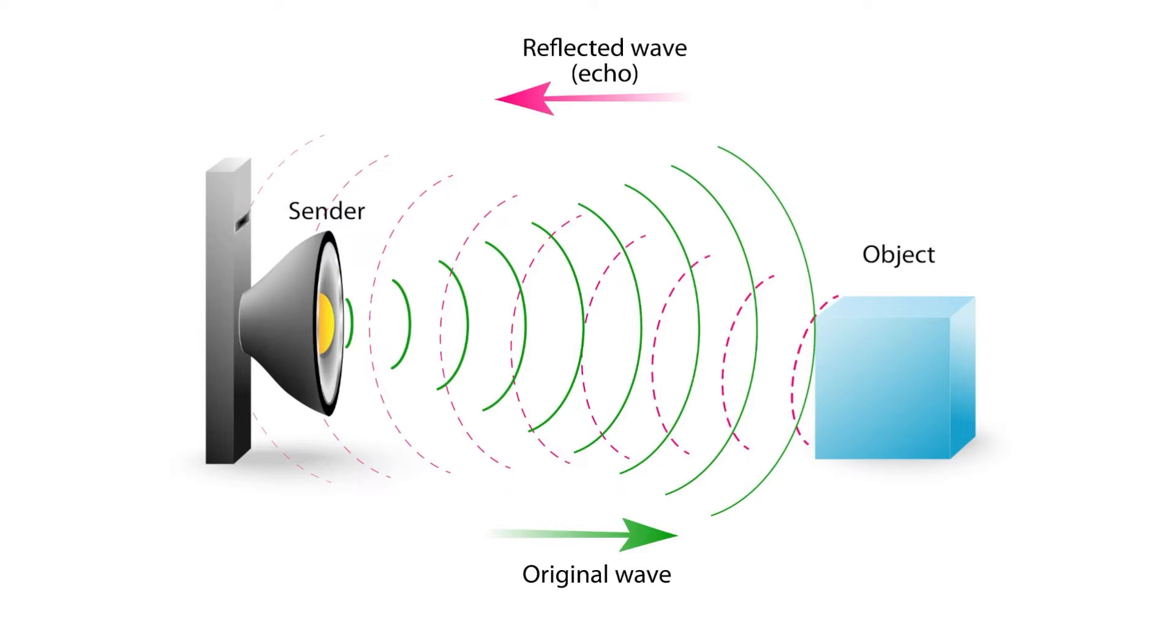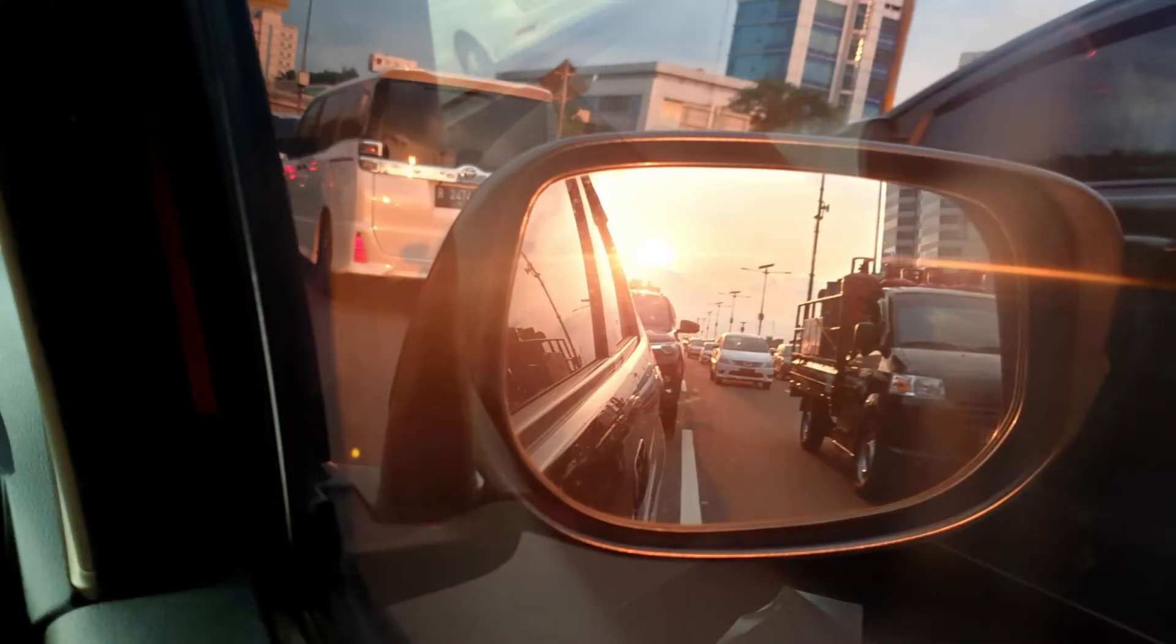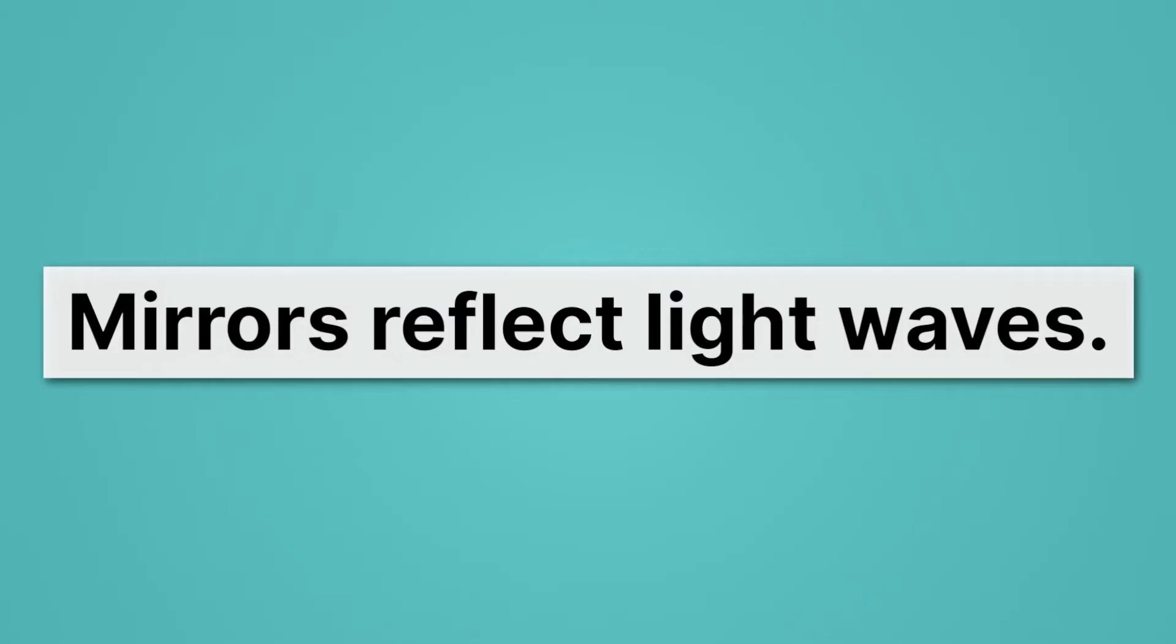Well, there are other important examples of a reflected wave. Here, we see light waves being reflected. Light is traveling from, say, that white van behind us, hitting our side view mirror, bouncing off, or reflecting, and hitting our eyes. So mirrors reflect light waves.